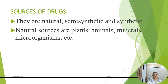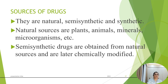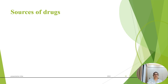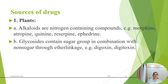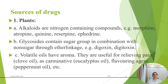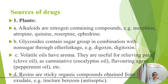Sources of drugs include natural, semi-synthetic, and synthetic origins. Natural sources are plants, animals, minerals, and microorganisms. Semi-synthetic drugs are obtained from natural sources and later chemically modified. From plant sources, alkaloids are nitrogen-containing compounds — examples include morphine, atropine, quinine, reserpine, and ephedrine. Glycosides contain a sugar group linked to a non-sugar group, with examples like digoxin and digitoxin. Volatile oils have aroma, such as eucalyptus oil, clove oil, and peppermint oil. Resins are sticky organic compounds obtained from exudates, such as tincture benzoin.